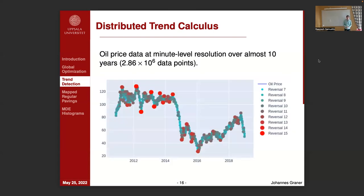Here is an example where we looked at oil price data at minute-level resolution over almost 10 years — approximately 3 million data points. The small blue dots in this image represent fairly low order reversals, while the large red dots are much higher order reversals. We see that the small dots are much more numerous and correspond to shorter term trends than the large red dots.